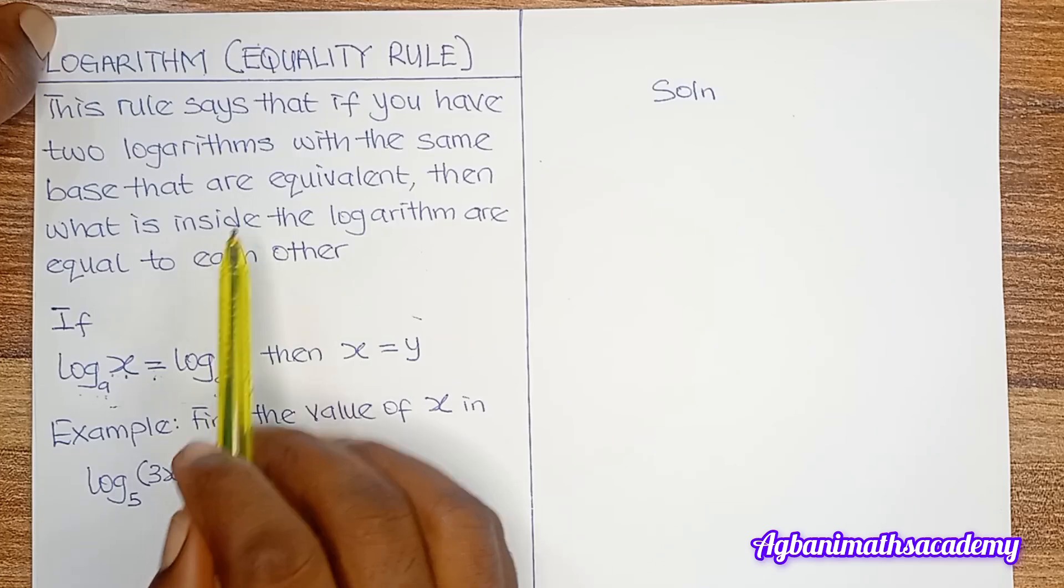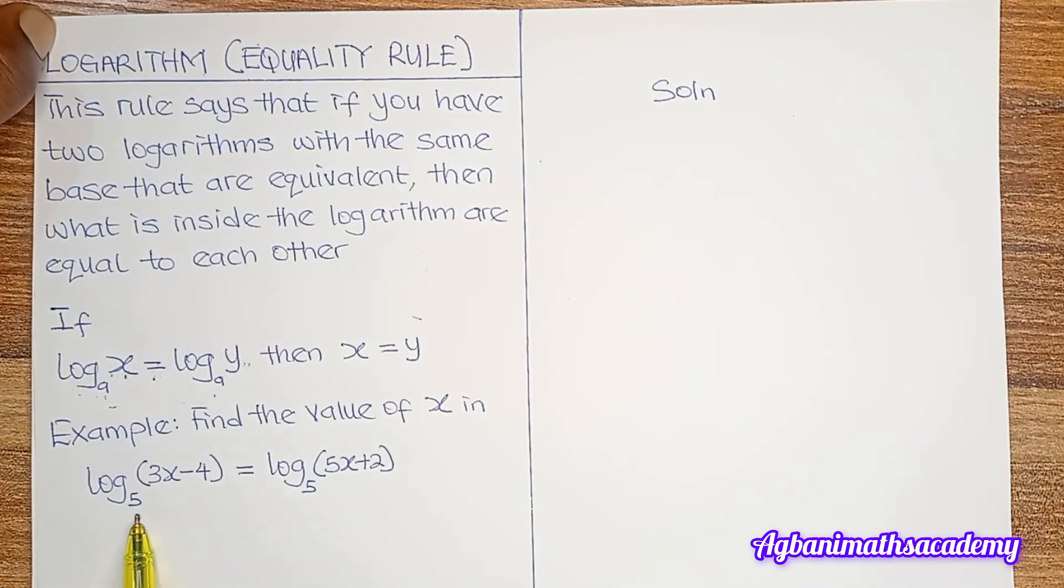Solution. So applying the equality rule, we see that the base here is 5. The base here is 5. This means this is equal to this.